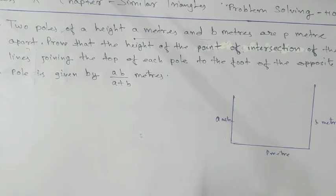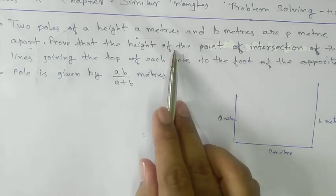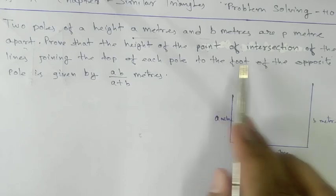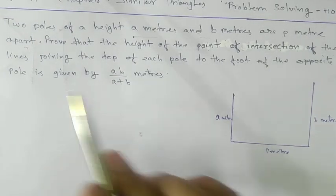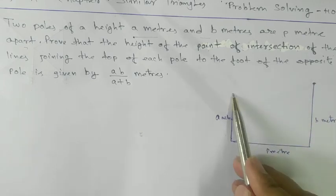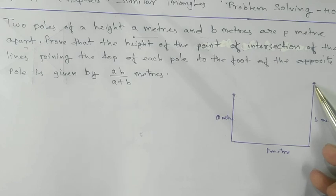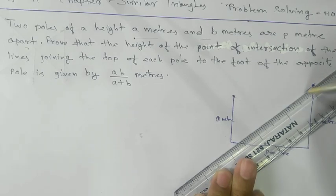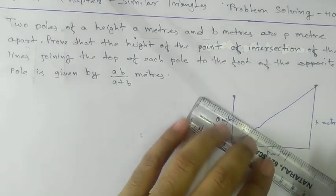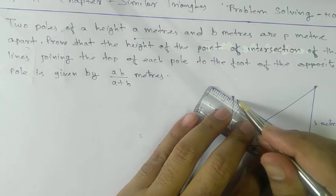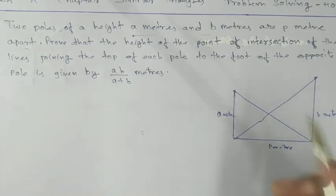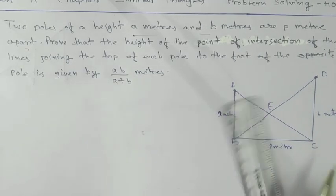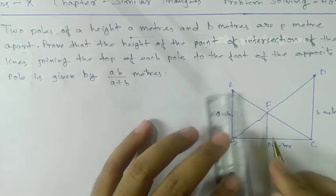Now what they are saying: prove that the height of the point of intersection of the line joining the top of each pole to the foot of the opposite pole. So from the top to the foot — we join them, and here we get the intersection point. Let's name the points A, B, C, D, E, and the height as F.